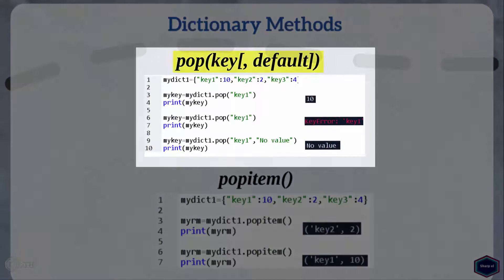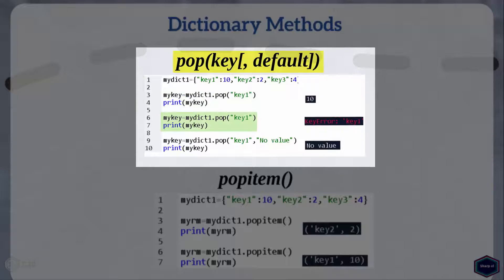The pop method takes a key as an argument, returns its value, and removes the key-value pair from the dictionary. If there is no such key in the dictionary, pop method raises a KeyError exception. But if the optional default argument is given and there is no such key, pop method returns the default value. In this example, I have called pop with key argument set to key1 — pop returns its value and removes key1 from the dictionary. Now if I again try to remove key1, Python will raise a KeyError exception. But if the default argument is given, Python will not raise the exception but returns the default value.